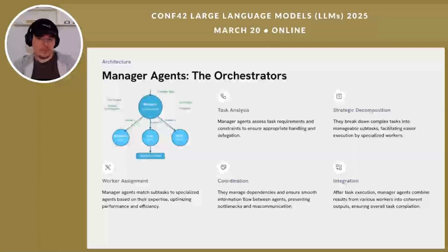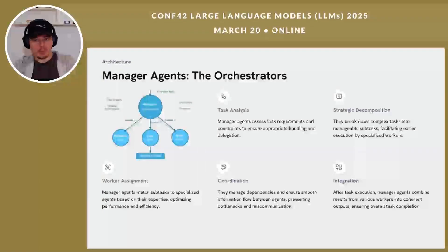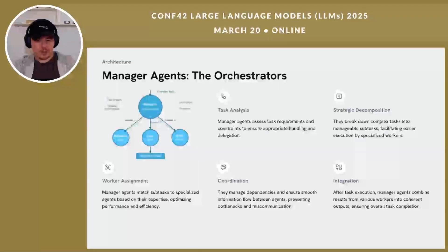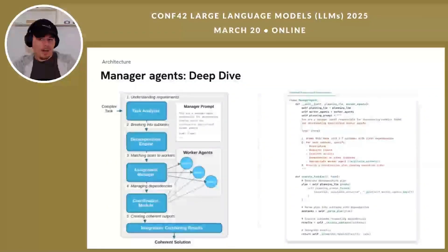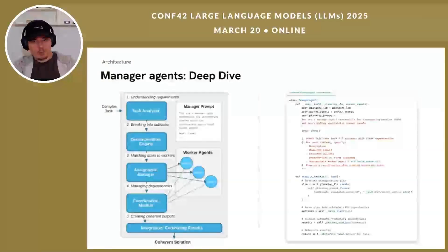Let's take a deeper look at manager agents — the orchestrators that make hierarchical systems work. Manager agents have five key responsibilities: task analysis, where they understand requirements and constraints; strategic decomposition, breaking complex tasks into coherent manageable subtasks; worker assignment, matching subtasks to agents with appropriate specializations; coordination, managing dependencies and information flow between workers; and integration, combining worker outputs into coherent final results. Creating effective manager agents requires careful prompt engineering. Here is a simplified implementation in Python using LangChain. The key insight is that the manager does not try to solve the problem directly — instead it focuses exclusively on decomposition and coordination, leveraging specialized workers for actual execution.